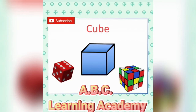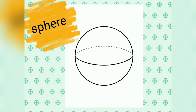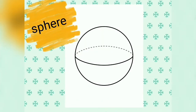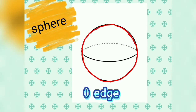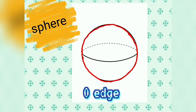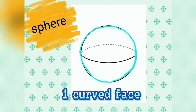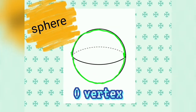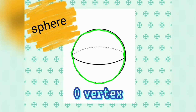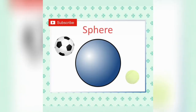Sphere. It has zero edges, one curved face, and zero vertices. A ball is an example of a sphere.